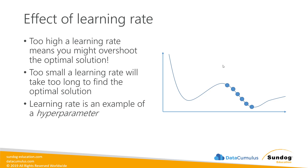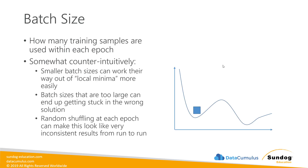Learning rate is an example of what we call hyperparameters — the knobs and dials you use while training your deep learning model that affect its end result. These hyperparameters can have just as much influence on model quality as the topology of the model or the feature engineering you've done. Another important hyperparameter is batch size — how many training samples are used within each epoch.